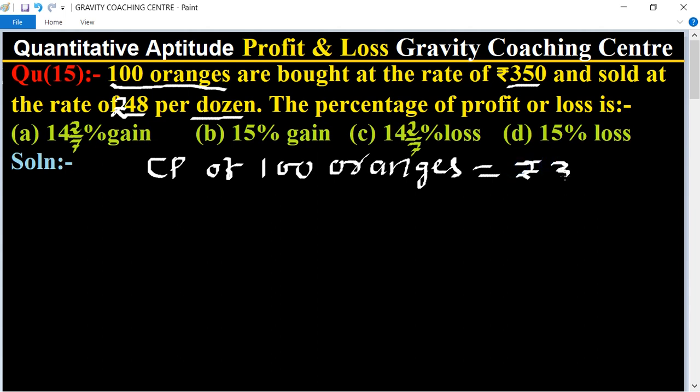Rupees 350. And SP of one dozen, so one dozen means 12 oranges, so SP of 12 oranges...